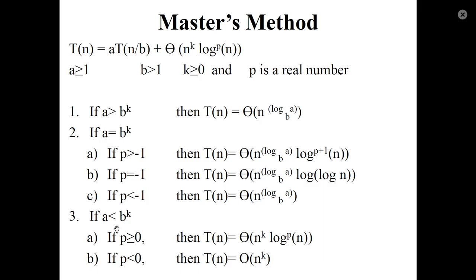If a < b^k, there are two sub-cases. If p ≥ 0, then T(n) = Θ(n^k · log^p(n)). If p < 0, then T(n) = Θ(n^k).